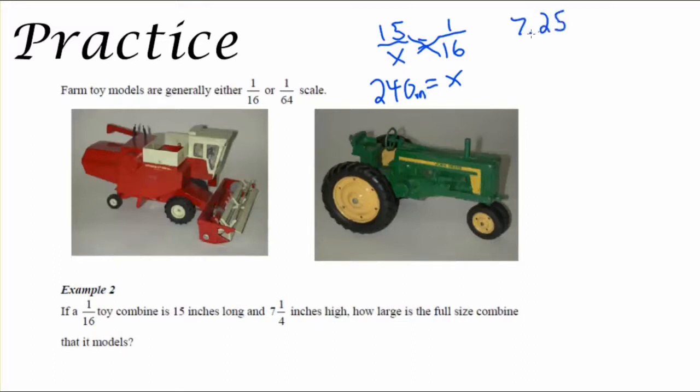Let's take a look at the height. So 7.25 inches, I converted that 7 and a quarter over X, equals 1 over 16. Cross multiplying, I'm going to get X equals, if I'm multiplying 7.25 by 16, I'll get 116 inches. So that means in converting it to feet, the length of our actual tractor is going to be 20 feet, and the height of our tractor will be 9.6 repeated feet, so about 9 feet 8 inches.